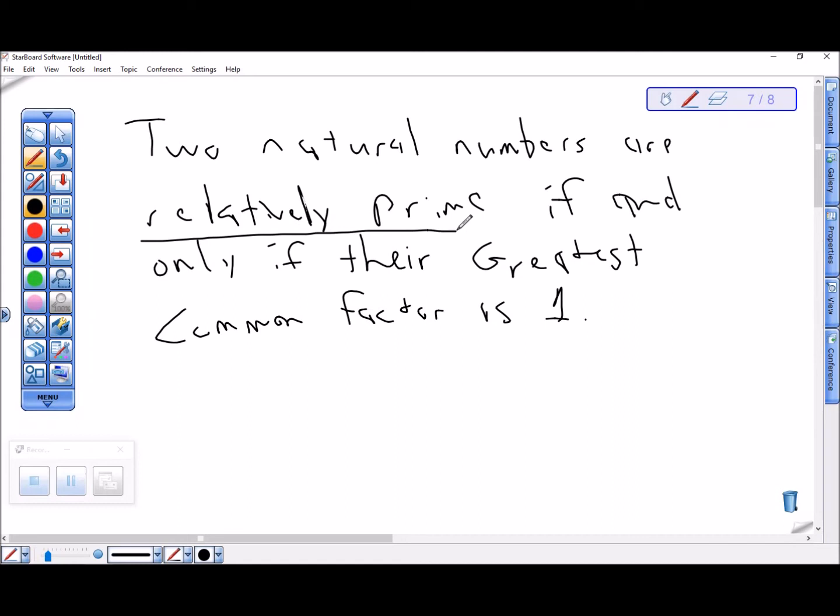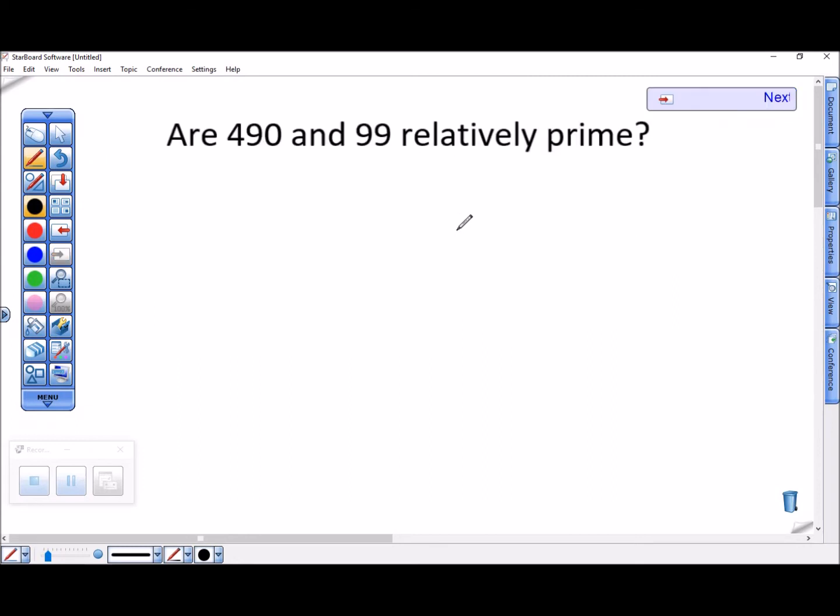Relatively prime numbers are pretty important in number theory, so it's worth knowing that definition. For example, let's see if 490 and 99 are relatively prime. So what we're really asking here is, is there a number larger than 1 that evenly divides both of these?